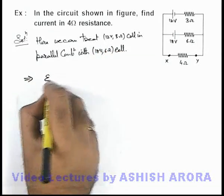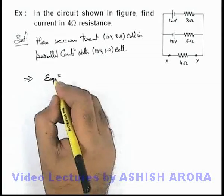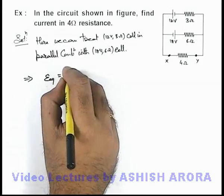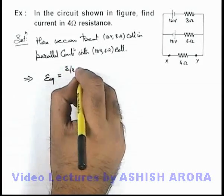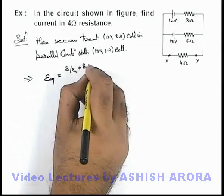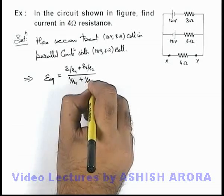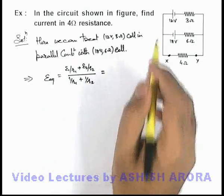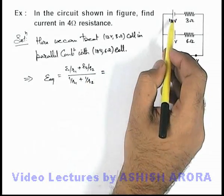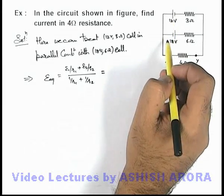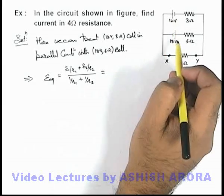This implies here we can use the equivalent resistance, and the expression we already know: that is E1 by R1 plus E2 by R2 upon 1 by R1 plus 1 by R2. But in this situation, you can see that the 18 volt cell and 12 volt cell are oppositely connected; these are not connected in the similar fashion.